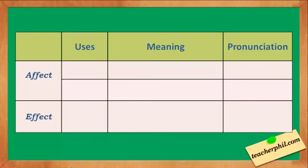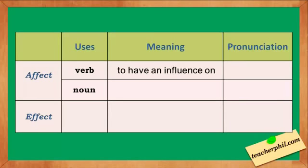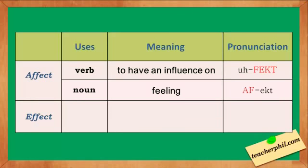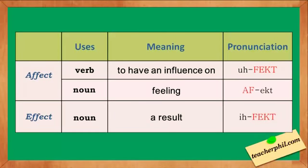Here's a table to help you understand more. We have the words affect and effect. Affect can be used as a verb and a noun. As a verb, it means to have an influence on, pronounced 'affect' with stress on the second syllable. As a noun, it means feeling or emotion, pronounced 'affect' with stress on the first syllable. Effect is commonly used as a noun — it means a result, pronounced 'effect' with stress on the second syllable.